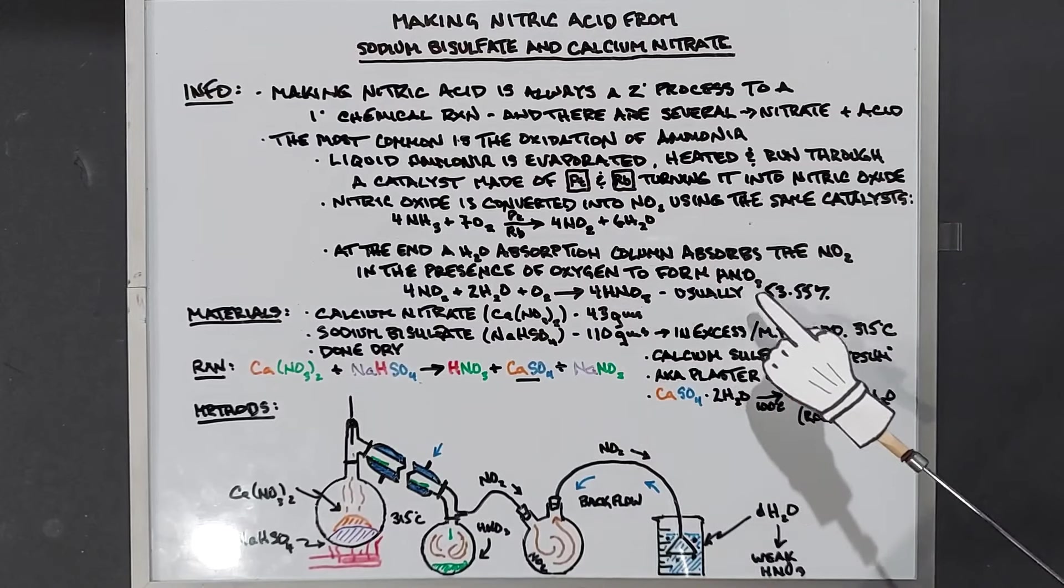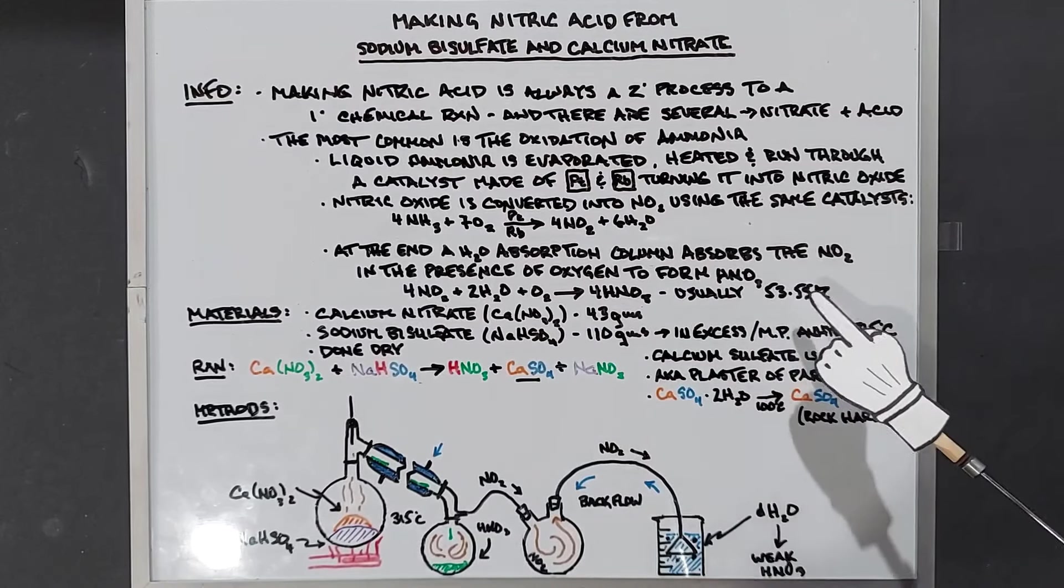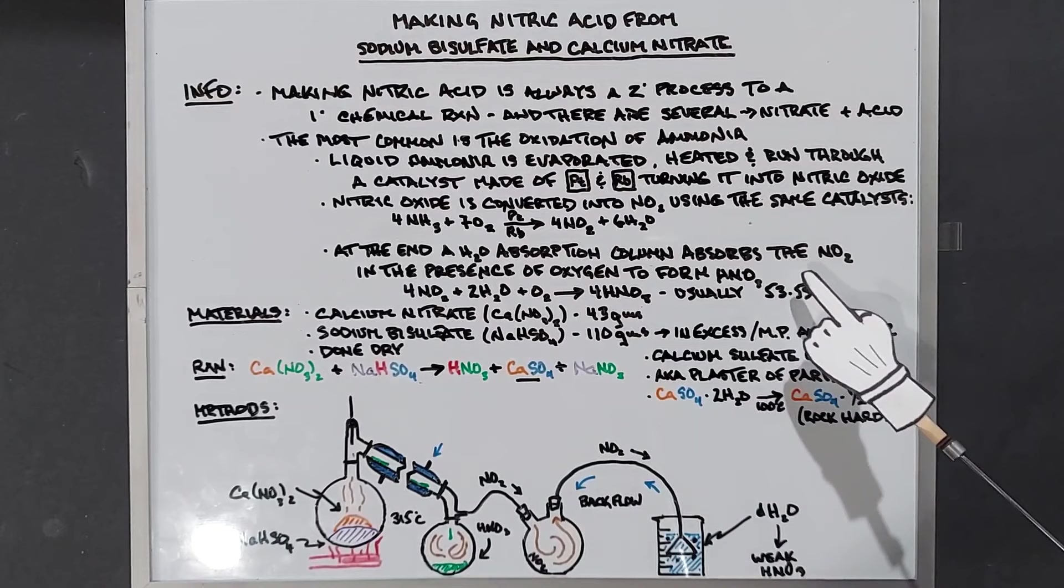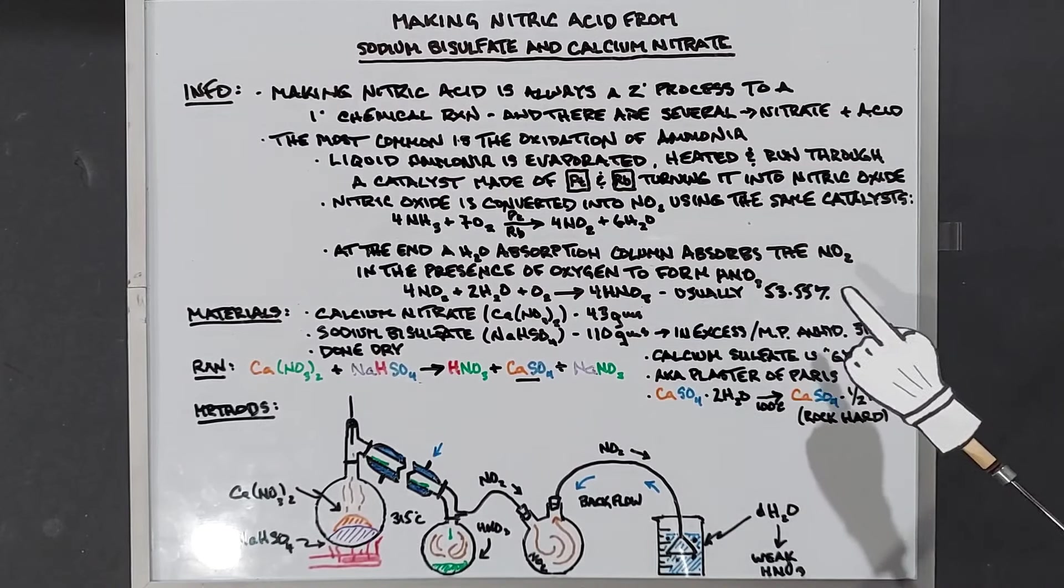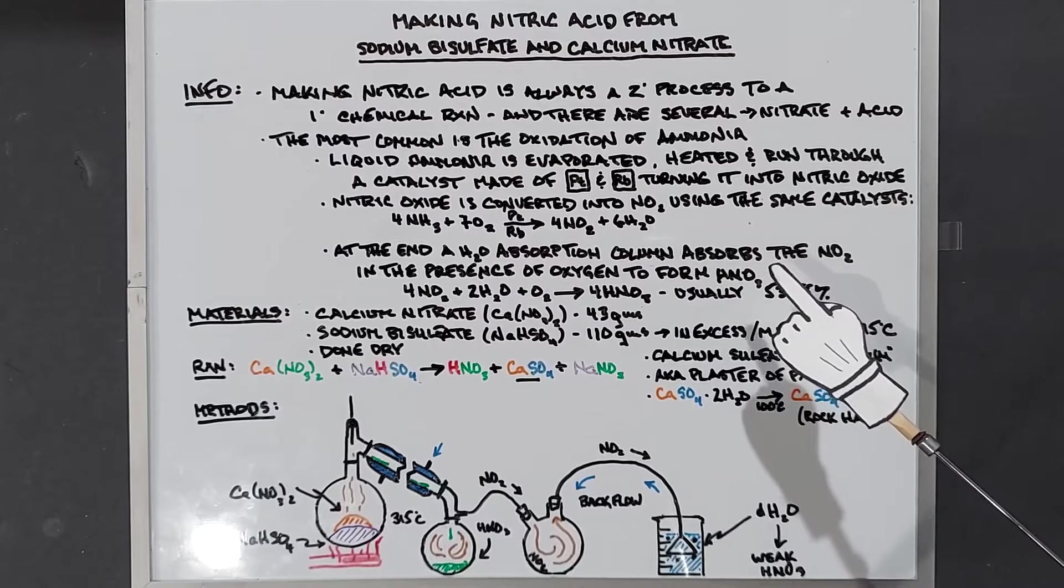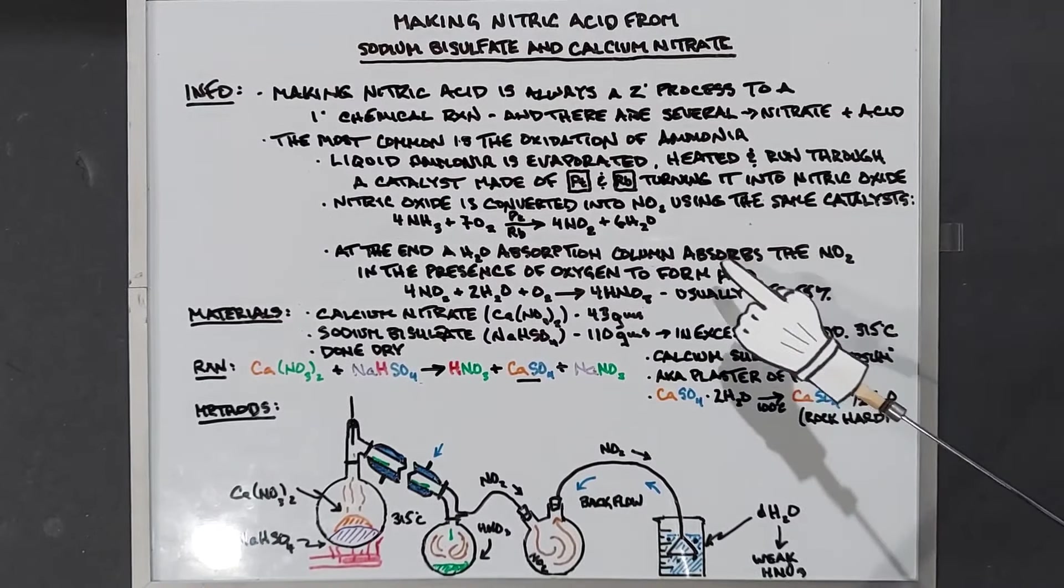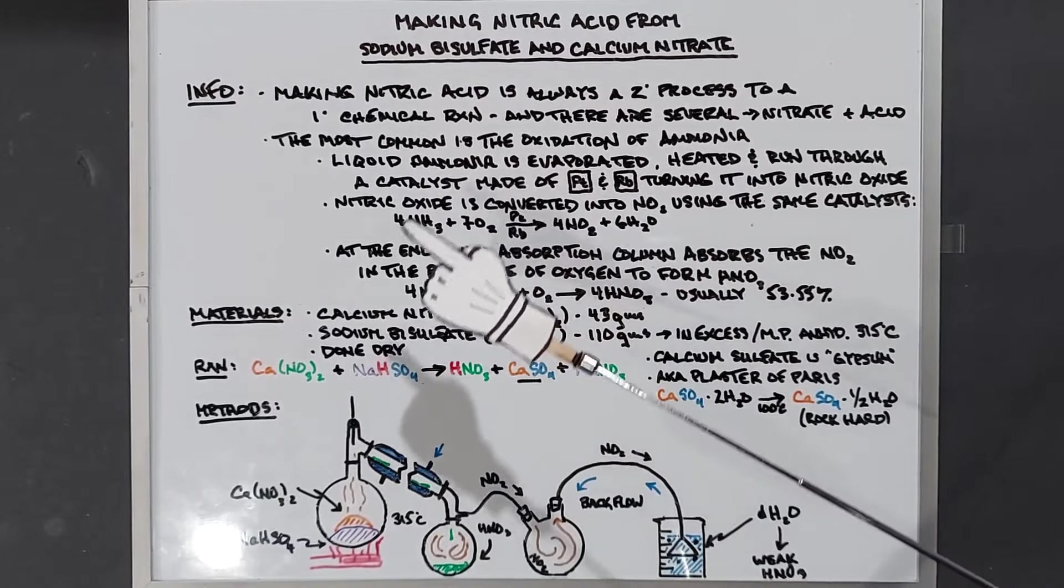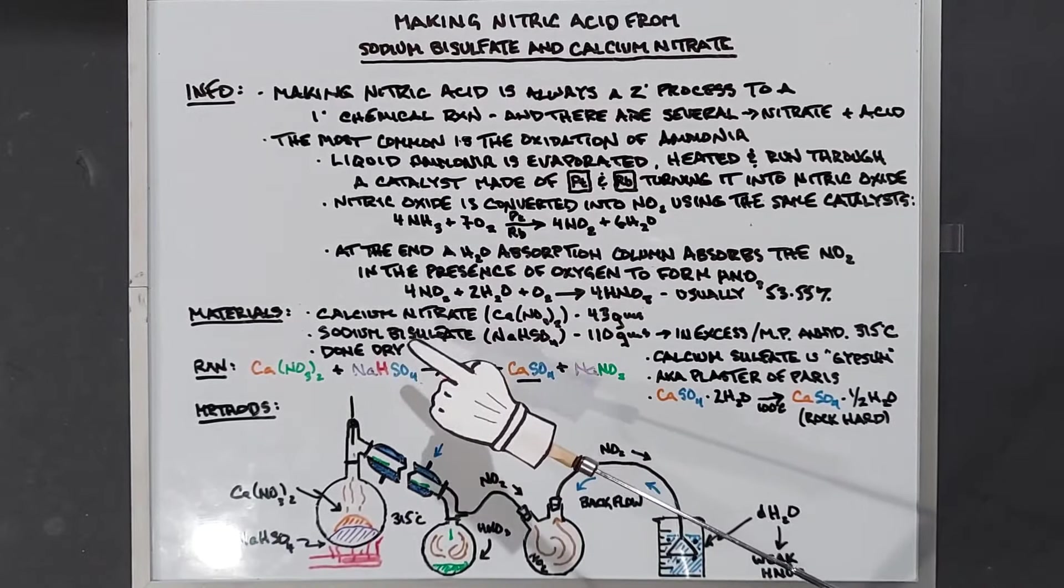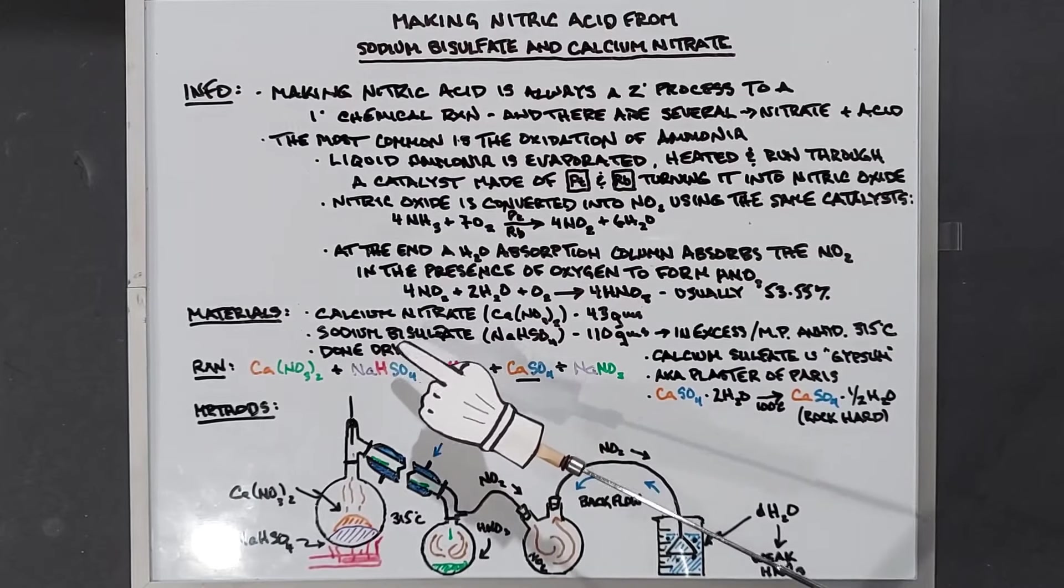Usually this is made at 53 to 55% because the fertilizer industry uses most of the nitric acid and they make approximately 195 million tons of fertilizer a year. Unfortunately I don't have any of this, so I'm going to do it the old-fashioned way with nitrate and sodium bisulfate, which is a replacement for sulfuric acid.